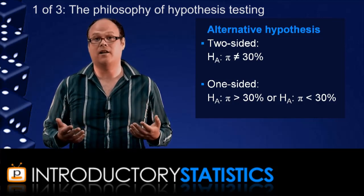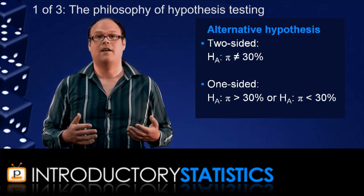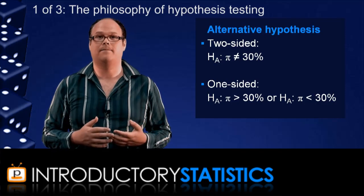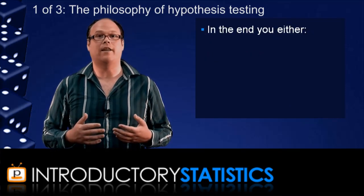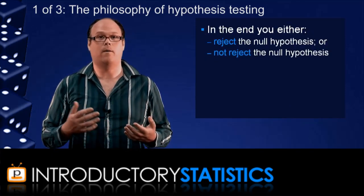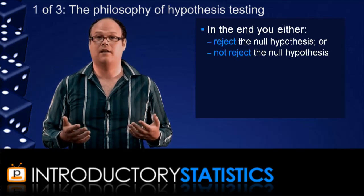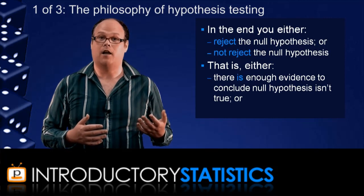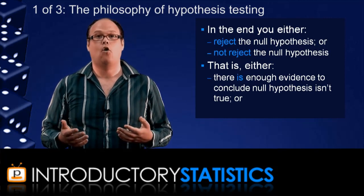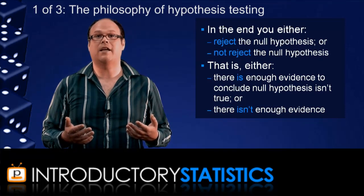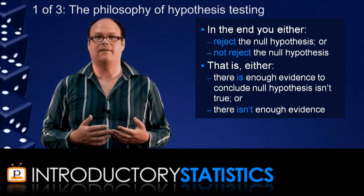For example, a one-sided test might propose in the alternative hypothesis that the proportion of fans that are female is less than 30%. Either way, in the end, we'll either reject the null hypothesis, or we won't. So at the end of a test, we'll always do one of two things. Either there's enough evidence to reject the null hypothesis and accept the alternative, or there's not enough evidence to reject the null hypothesis. We can say we retain the null hypothesis in that case.